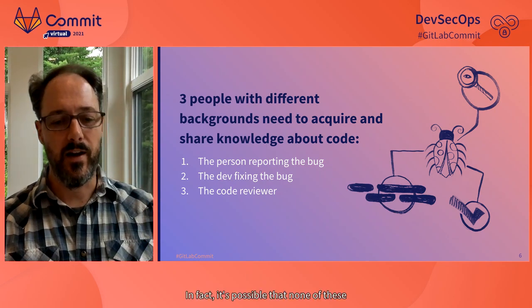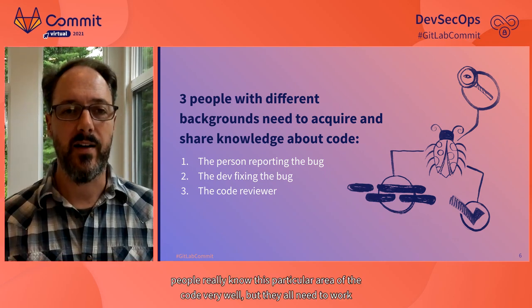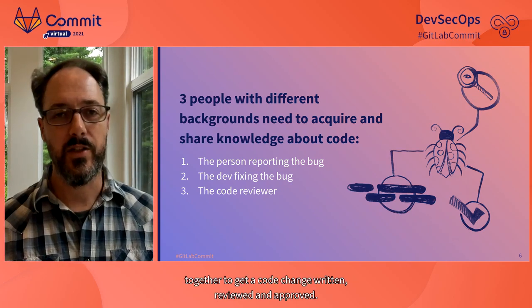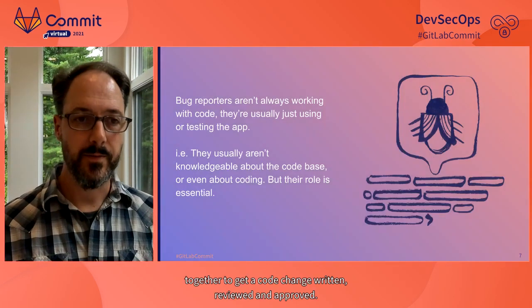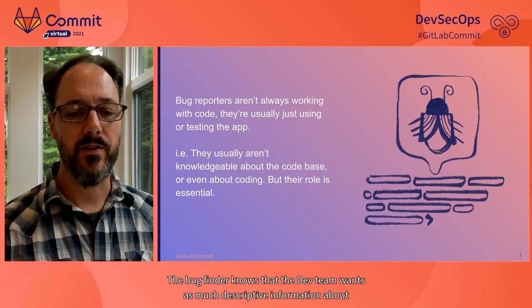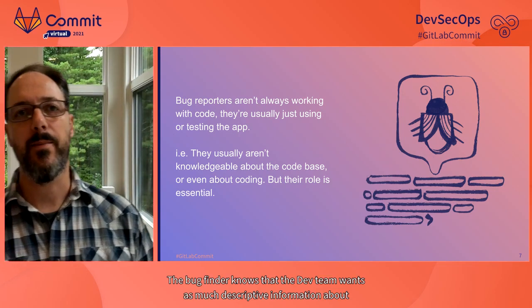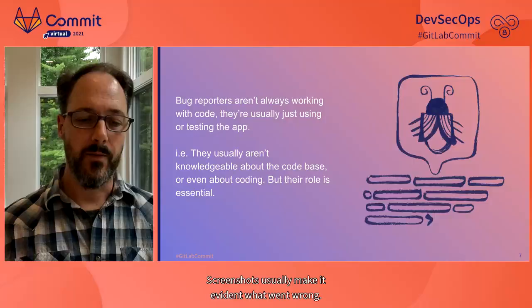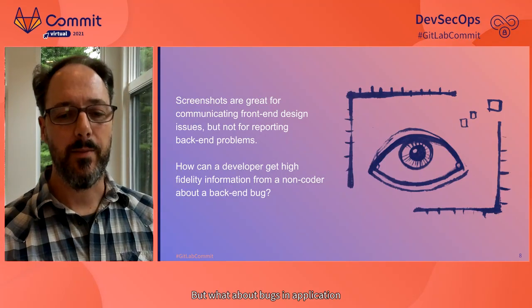In fact, it's possible that none of these people really know this particular area of the code very well, but they all need to work together to get a code change written, reviewed, and approved. The bug finder knows that the dev team wants as much descriptive information about the bug as they can get — what the tester was doing, what they typed in, what buttons they pushed, what they saw. This description can be accompanied by some screenshots. For UI bugs, this works great — screenshots usually make it evident what went wrong.